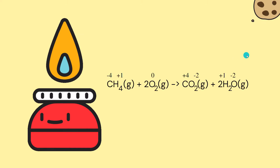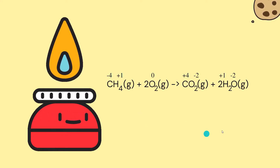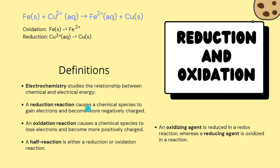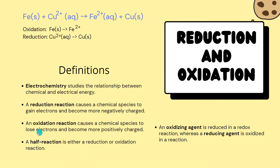This is the definition of a redox reaction. In chemical terms, a redox reaction usually involves a reduction reaction and an oxidation reaction. A reduction reaction causes the chemical species to gain electrons and become more negatively charged — for example, copper 2+ ions are reduced to copper metal. An oxidation reaction causes the chemical species to lose electrons and become more positively charged — for example, iron metal oxidizes to iron 2+ ions.